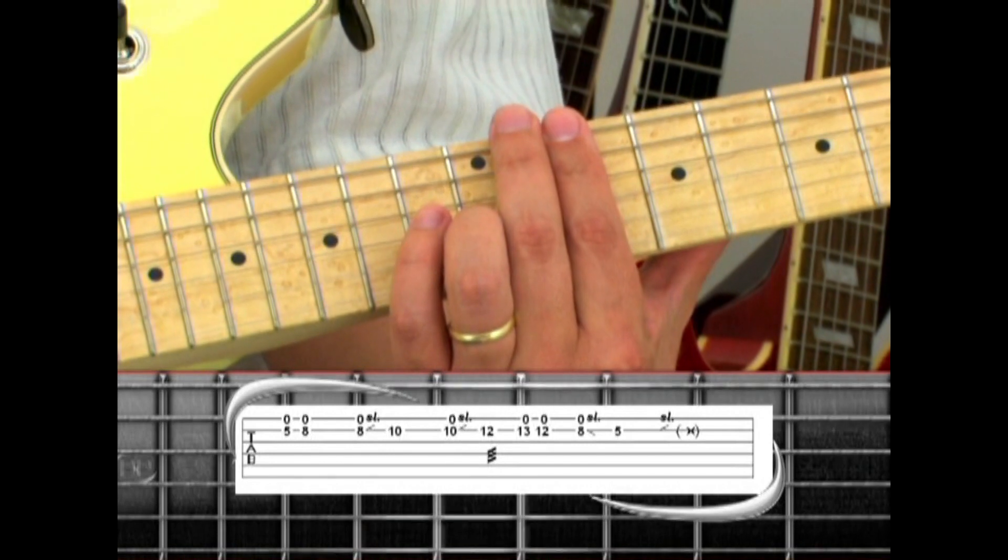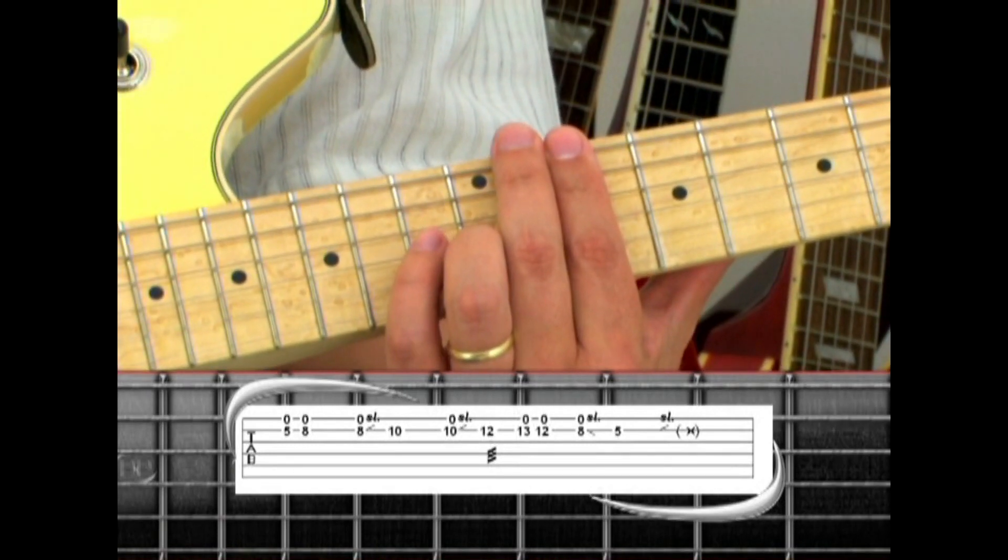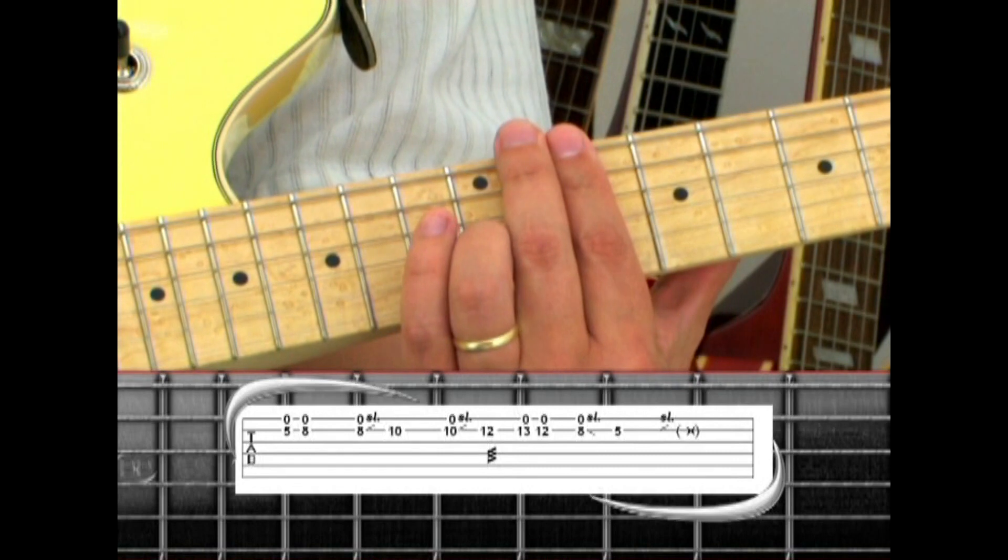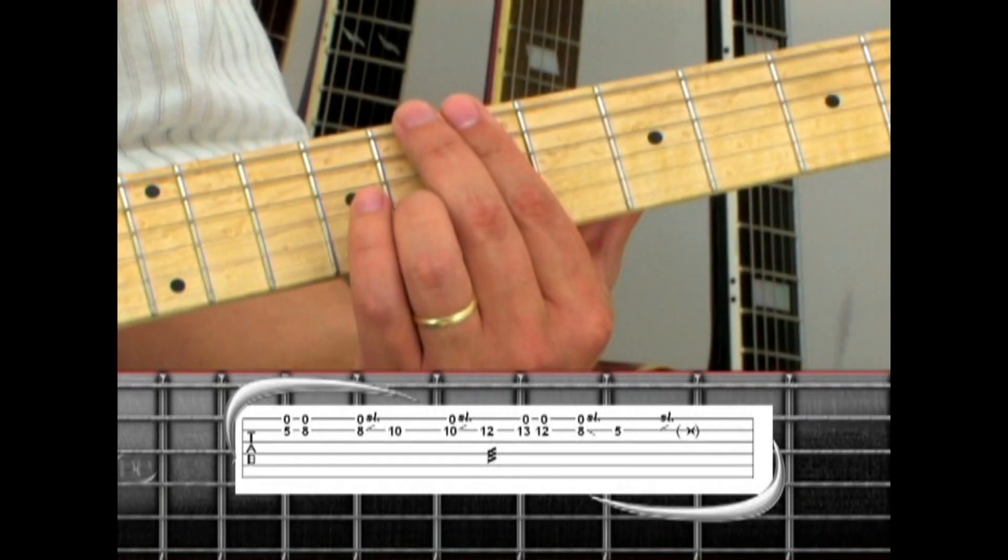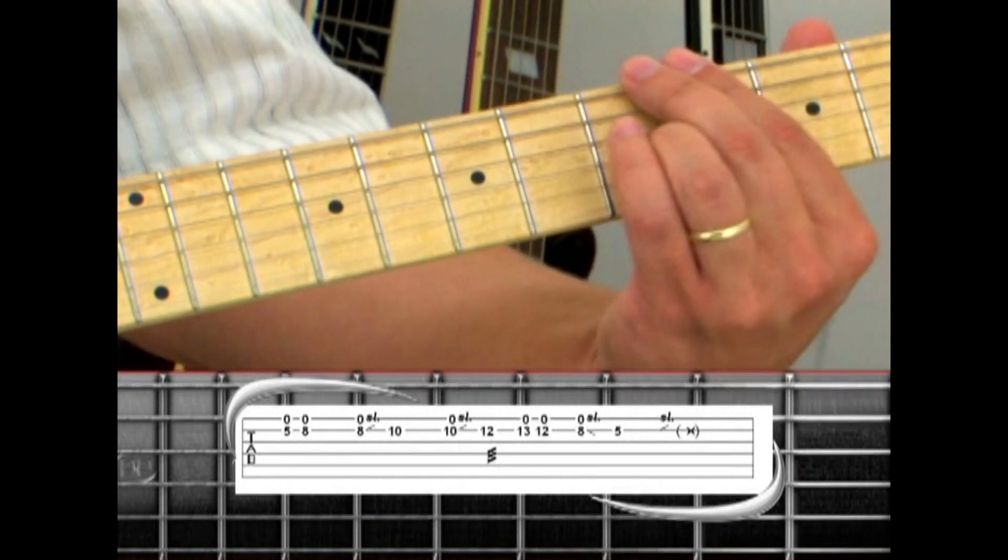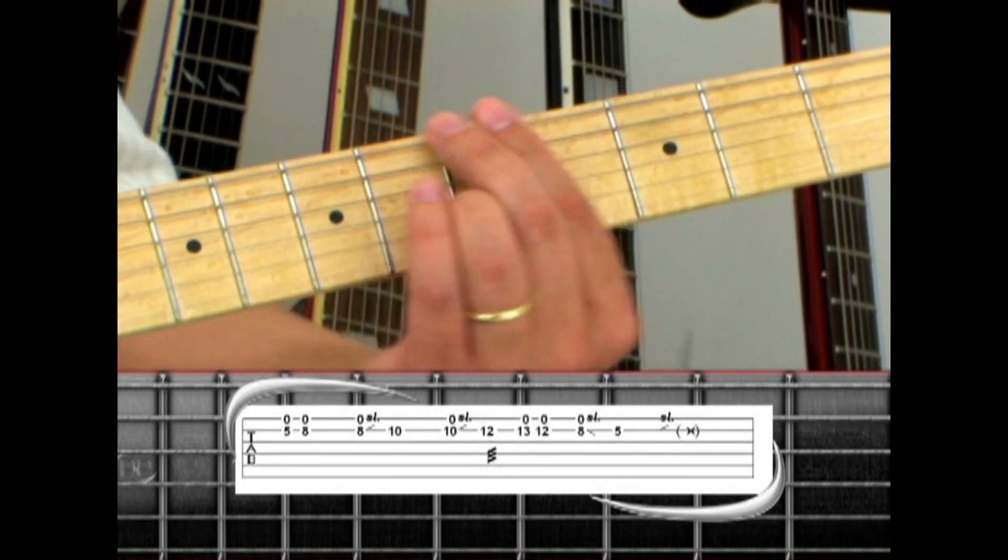Rapidly picking twelve, then thirteen, twelve. Eight, slide down to five. Hold and slide up the neck.